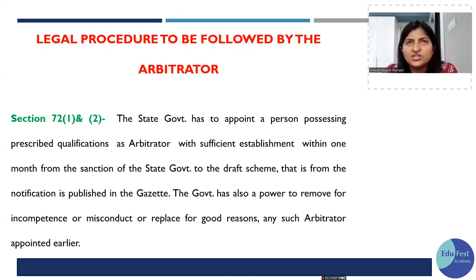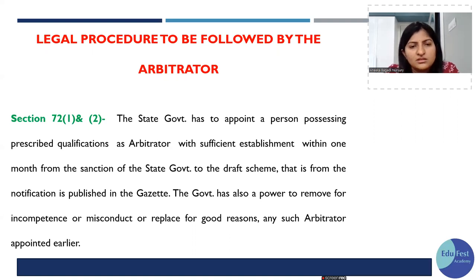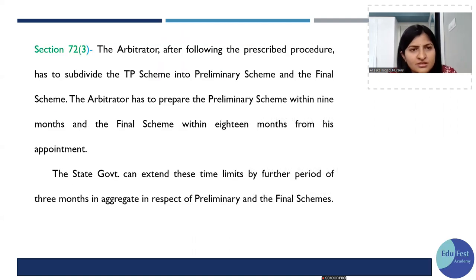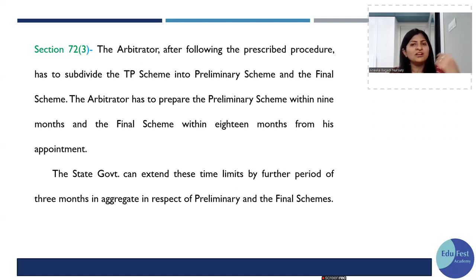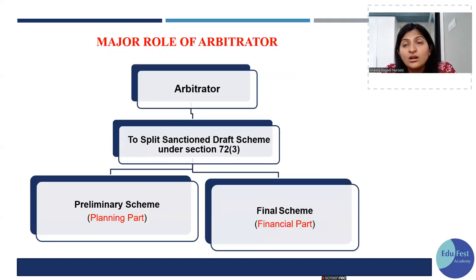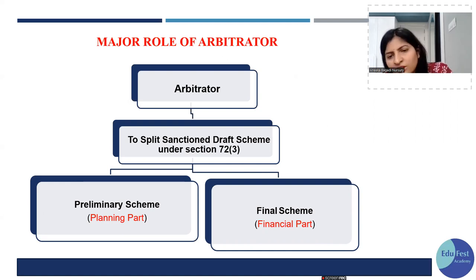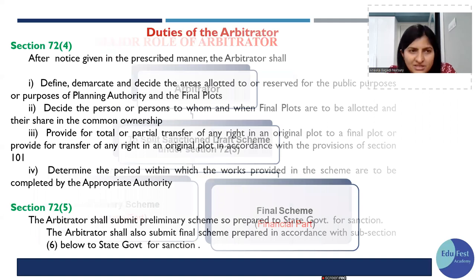Section 72 has subsections 1 through 6. Once the state government sanctions the draft TP scheme, within 1 month it must appoint an arbitrator. The arbitrator then subdivides the TPS into a preliminary scheme and a final scheme. The preliminary scheme must be made within 9 months of the arbitrator's appointment, and the final scheme within 18 months. The planning aspects are confirmed in the preliminary scheme; the financial aspects are confirmed in the final scheme.